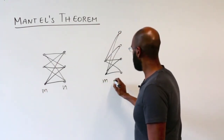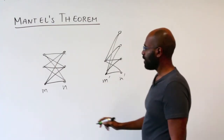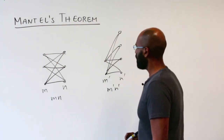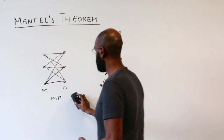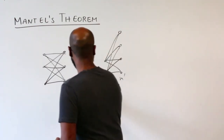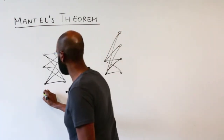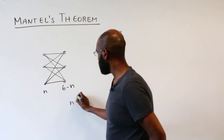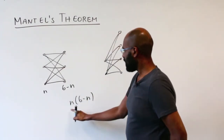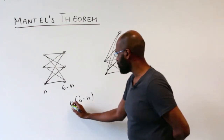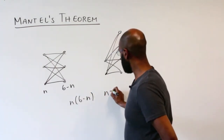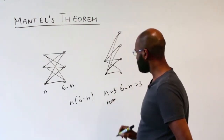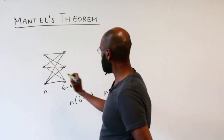So if you have m and n vertices on each side, the product is the number of edges. If our graph has six vertices and we have n vertices on one side, the other side has six minus n vertices, so the total number of edges is n times (six minus n). The sum of these numbers is six, so this is maximized right in the middle where n is three and six minus n is three as well. So the maximum number of edges we get in a structure like this is nine.